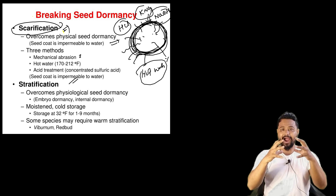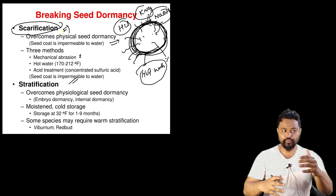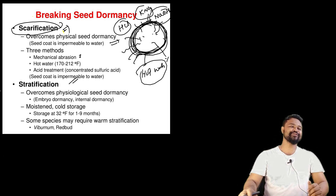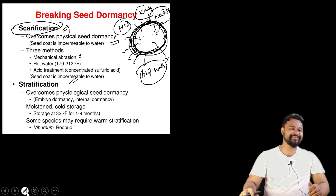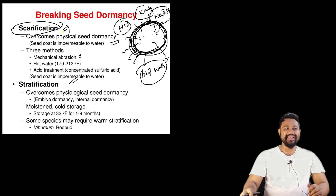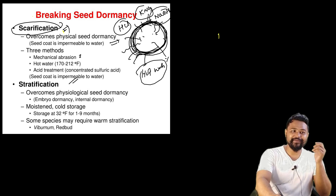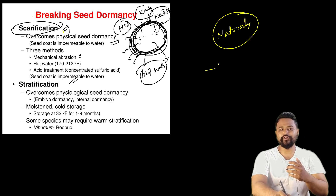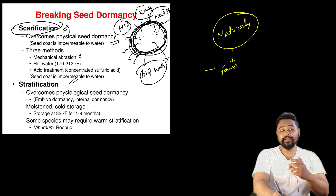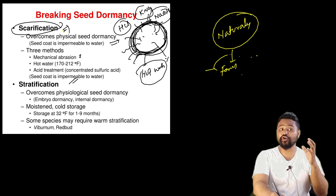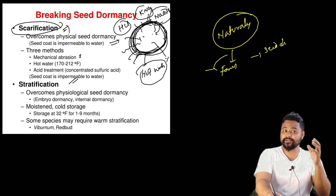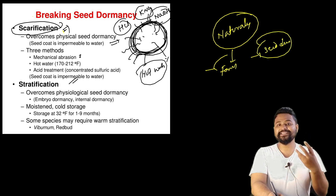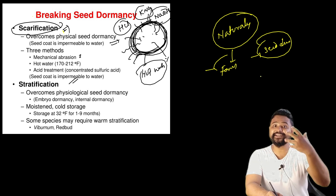We can also observe natural scarification. In nature, this process happens naturally - for example, in a forest environment where seeds are naturally exposed to conditions that break their dormancy.